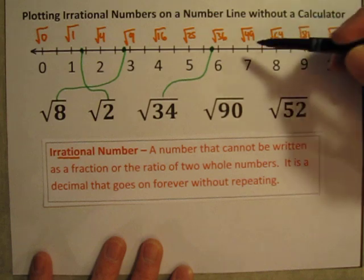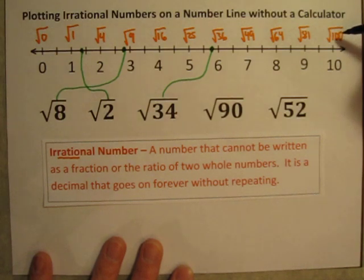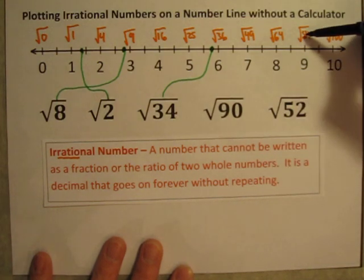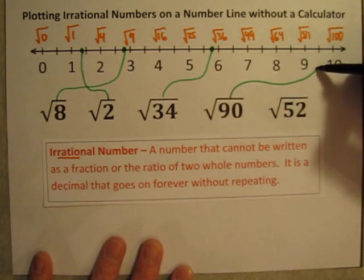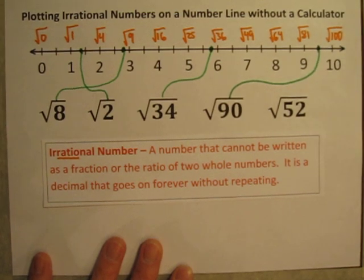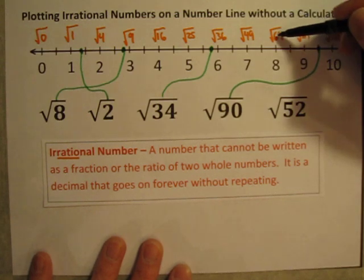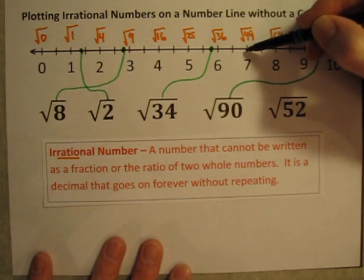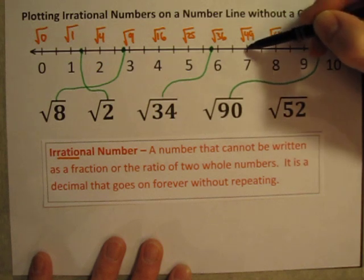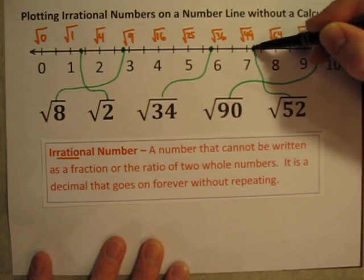How about the square root of 90? It's greater than the square root of 64, greater than the square root of 81, but less than the square root of 100. Ninety is about halfway between eighty-one and one hundred, so the square root of 90 is probably about halfway between nine and ten — maybe slightly greater than nine and a half. And finally, the square root of 52: it's less than sixty-four, greater than forty-nine, so it's between seven and eight. Since fifty-two is closer to forty-nine, it's between seven and seven and a half. So the square root of 52 goes right about there.